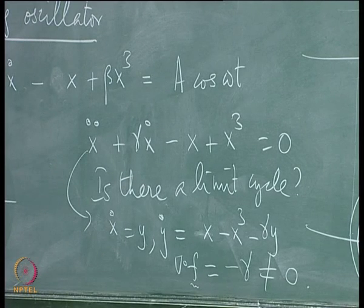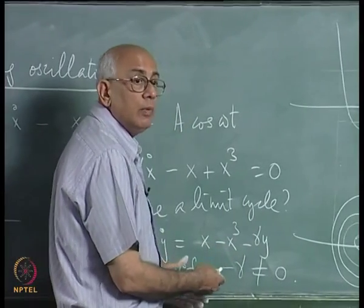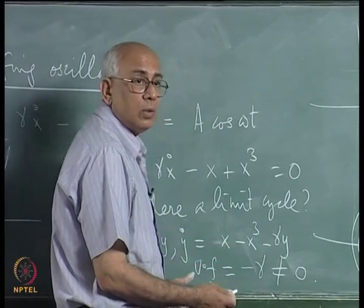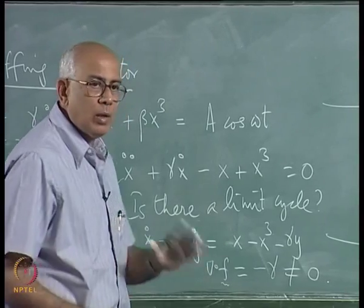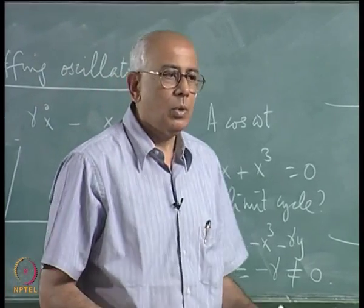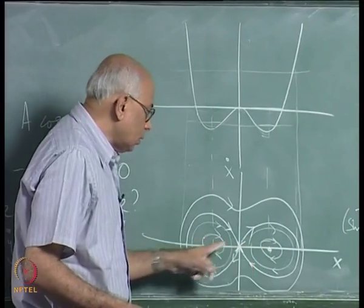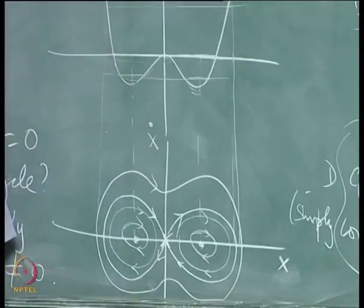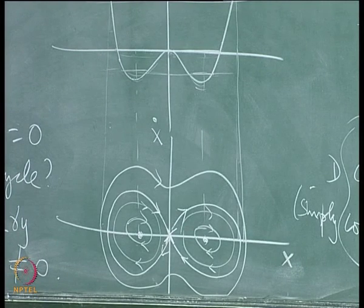What is ∂f/∂x + ∂g/∂y in this problem? The derivative of y with respect to x is 0, plus the derivative of (x − x³ − gamma·y) with respect to y, which is −gamma. That is not 0, so by the Bendixson criterion the unforced linearly-damped Duffing oscillator cannot have a limit cycle. No matter what your initial conditions are, you will always flow into one of the two attractor points eventually. This is a very useful criterion, and we will see more properties of this next time.